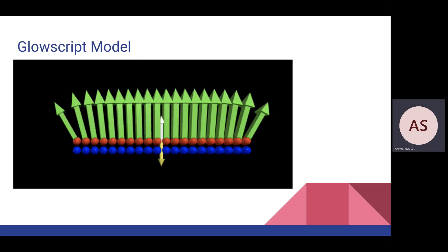Here is the GlowScript model we created for this scenario. Each green arrow represents the electric field from an individual point charge. The white arrow pointing up is the net electric field, and the yellow arrow pointing down represents the net gravitational field.